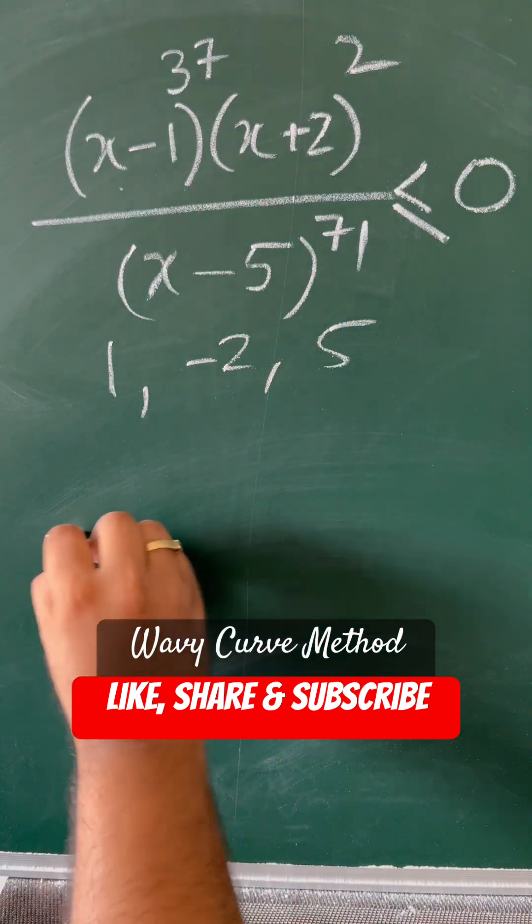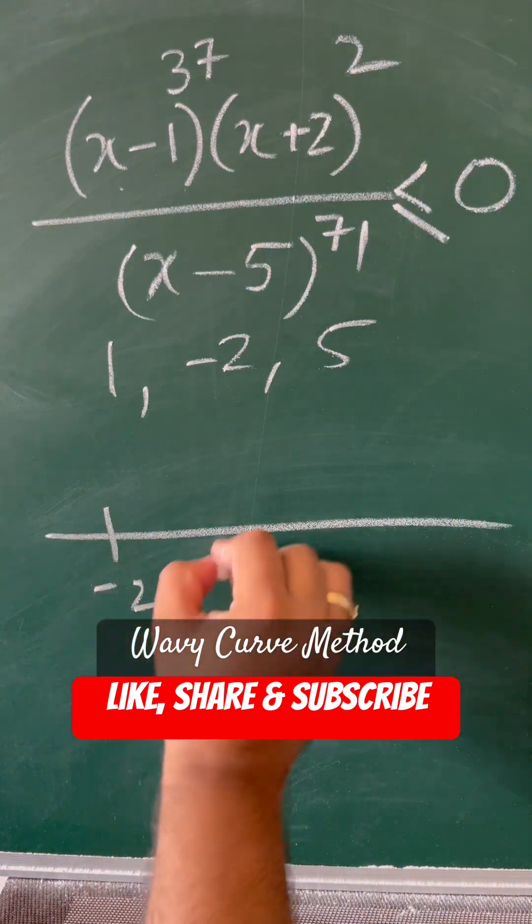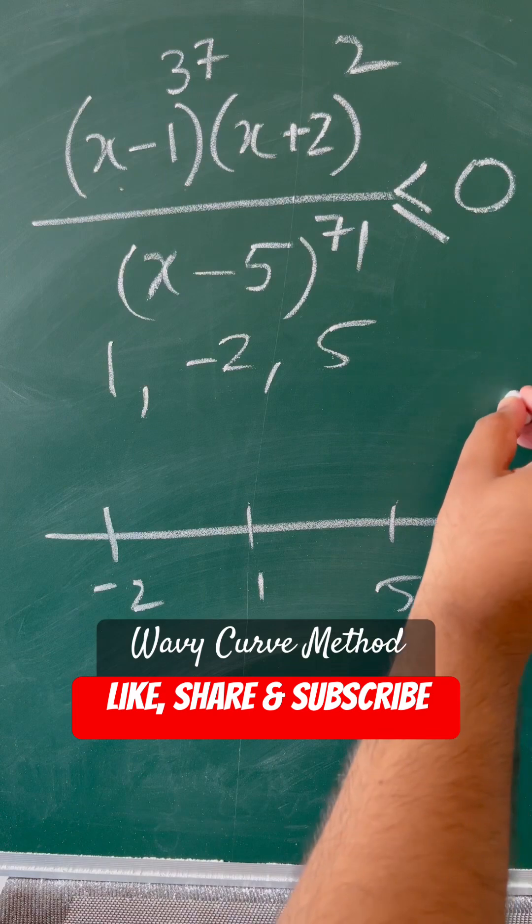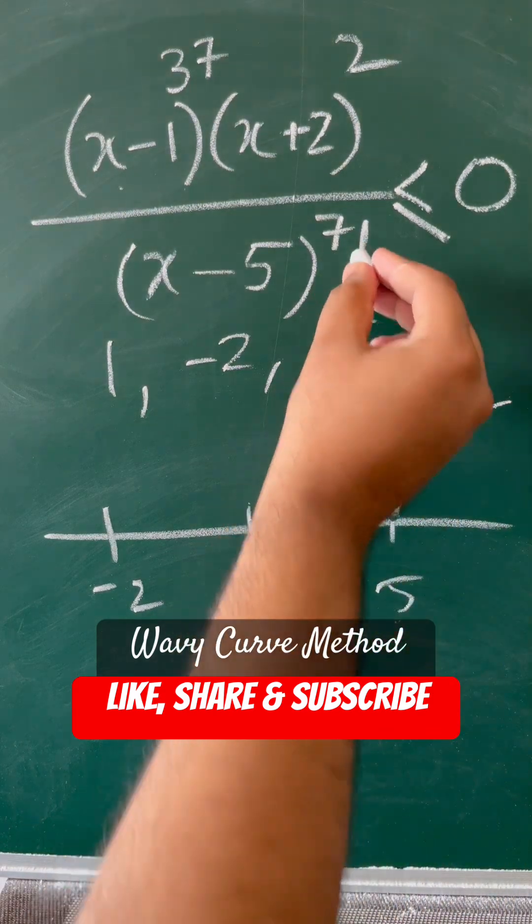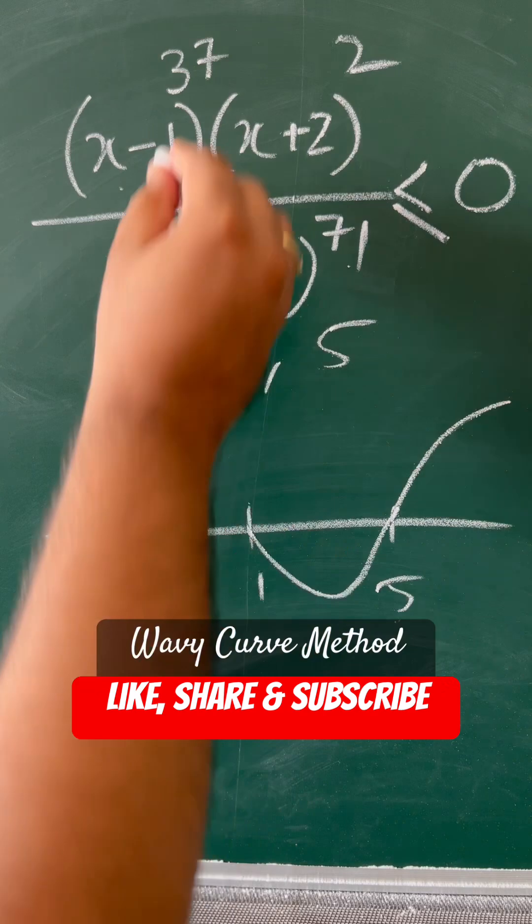I am plotting these on the number line: -2, 1, and 5. We start from this side. At 5 we have odd power, so you move to the next part. At 1 you have odd, so you move to the next part.